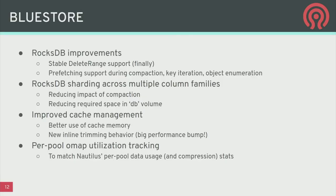Performance is always a big challenge. On the BlueStore front, a lot is happening in the RocksDB space. Upstream RocksDB has finally stabilized support for range key deletion, which we're now using. There are fixes in prefetching that improve performance for enumerating objects and OMAP keys, compaction, and other places where BlueStore would slow to a crawl. There's also a big effort to shard data across multiple column families within RocksDB, which improves compaction, space utilization, and overall performance. Memory management and cache consumption have also been improved significantly.